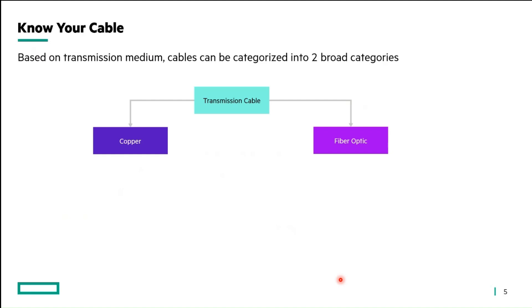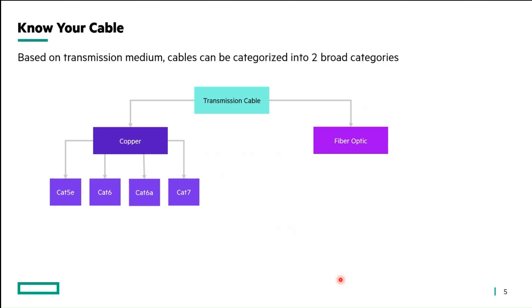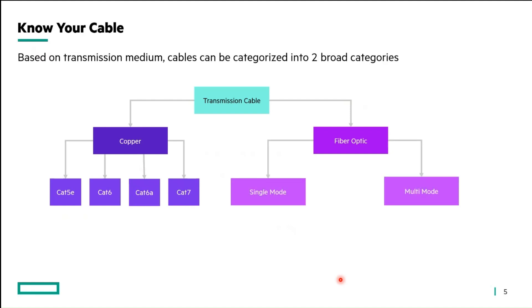For copper, the cable is made up of copper and comes in five types: CAT5E, CAT6, CAT6A, and CAT7. For fiber optic, there are two subcategories: single mode and multimode. The multimode subcategory has other subtypes known as OM1, OM2, OM3, up to OM5.